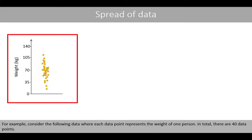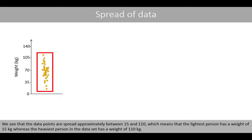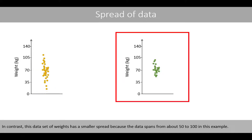The spread of the data tells us how close or how far away the data points are from each other. Consider the following data where each data point represents the weight of one person — in total, 40 data points. One data point represents a person with a weight of 110 kilos, whereas another represents a person with a weight of 15 kilos. The data points are spread approximately between 15 and 110. In contrast, a second data set of weights has a smaller spread, spanning from about 50 to 100.